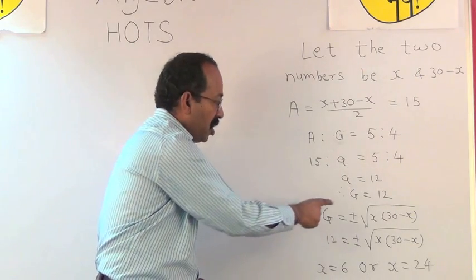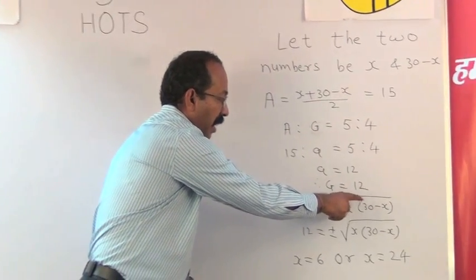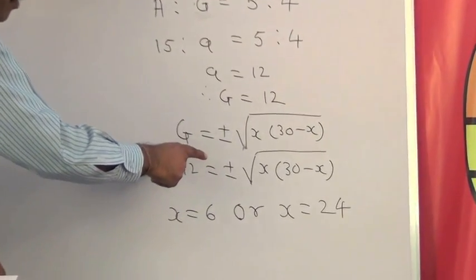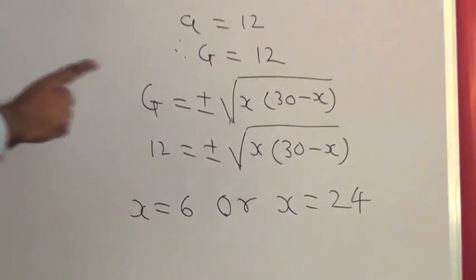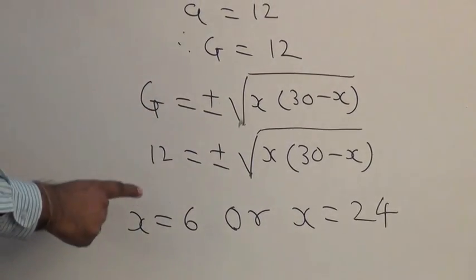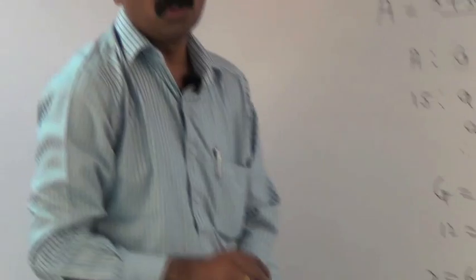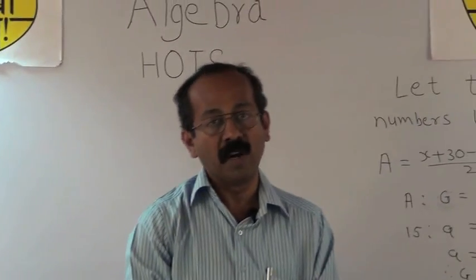So G is equal to plus minus square root of x times bracket 30 minus x. Substituting G equals 12, we get this equation. After solving this equation, we get the value of x equals 6 or x equals 24. So these two numbers are 6 and 24.